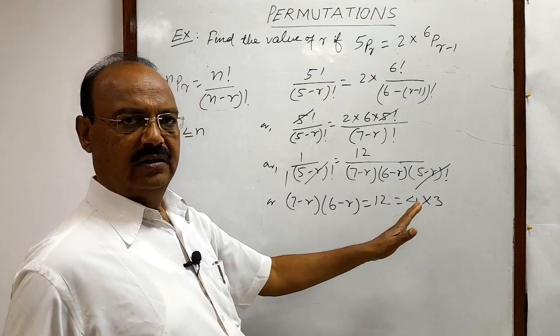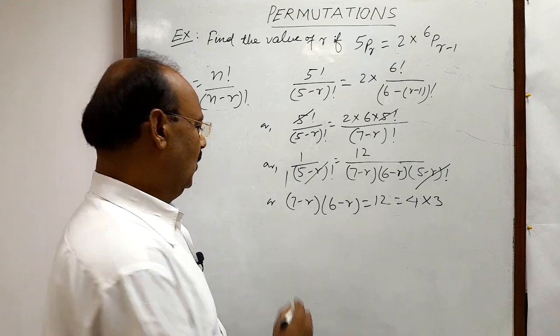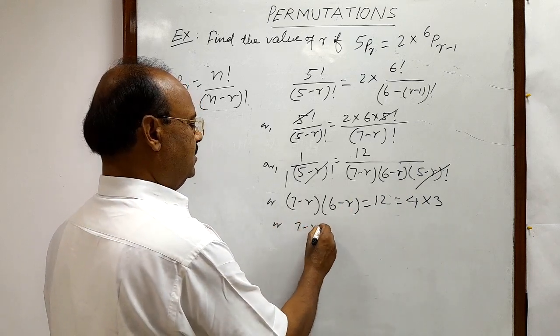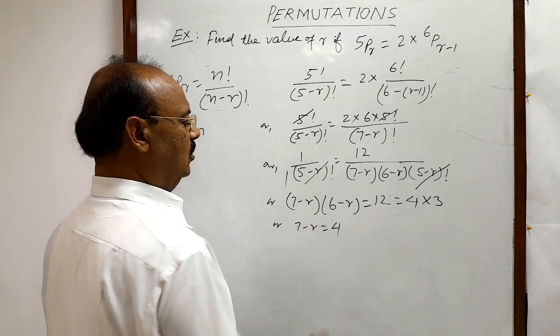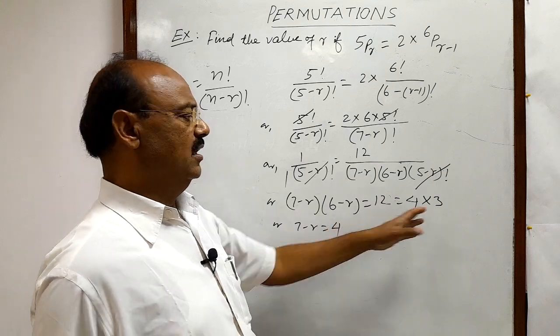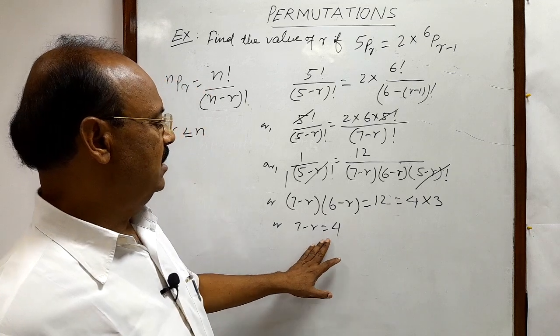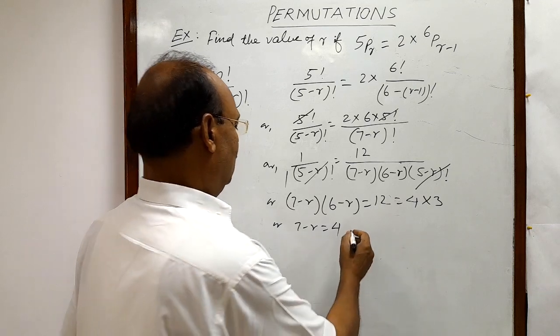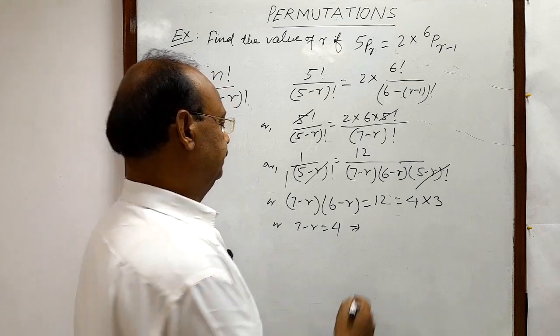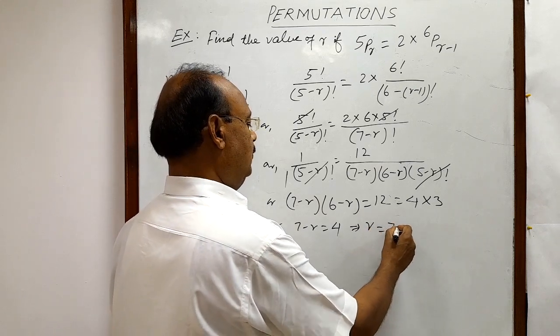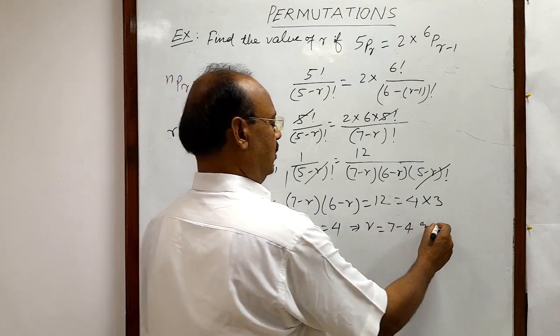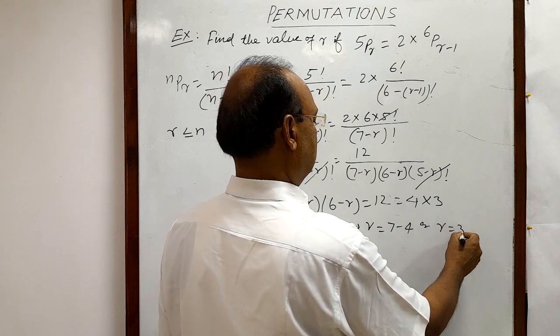So by direct comparison from RHS and LHS we can get 7 minus r is equal to 4, or you can write 6 minus r is equal to 3. We will get the same result, no problem. So 7 minus r is equal to 4 gives us r is equal to 7 minus 4, or r is equal to 3.